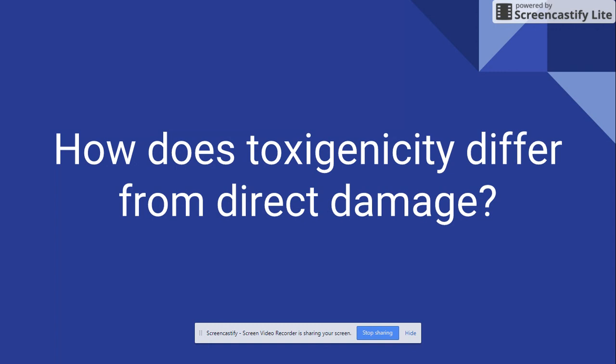How does toxigenicity differ from direct damage? Toxigenicity is the ability of a cell to produce a toxin. Direct damage is something physical — like boring a hole into something or causing the cell to rupture — whereas a toxin causes damage via different means. It's like having a chisel in your hand doing direct damage to something versus producing a poison that then goes on to cause the damage.